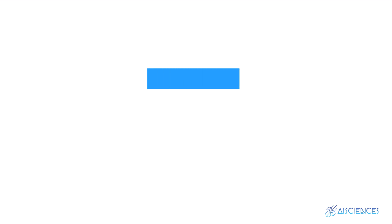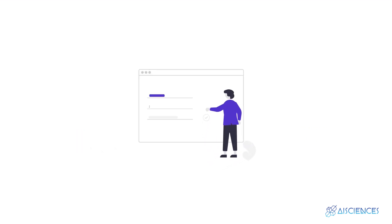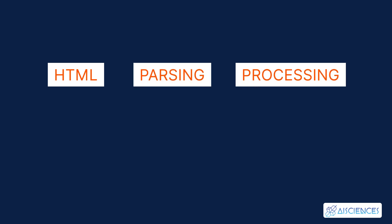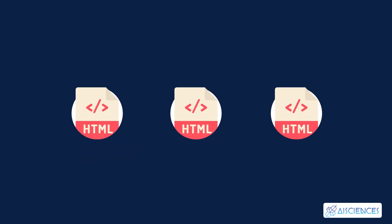Number 3: Scrapy. A full-fledged web scraping solution released in 2008, this framework simplifies the task of building and configuring your spiders. Within minutes of installation, you'll have a fully functional spider scraping the web. Scrapy spiders are capable of downloading HTML, parsing and processing the data, and saving it in either JSON, XML, or CSV file formats. Scrapy spiders can also make multiple HTML requests.